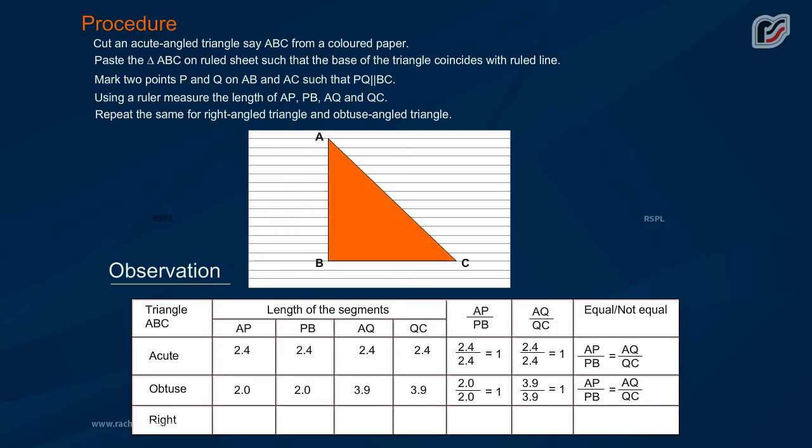For right: 2.0, 2.0, 2.9, 2.9. 2.0 by 2.0 is equal to 1, 2.9 by 2.9 is equal to 1. AP by PB is equal to AQ by QC.